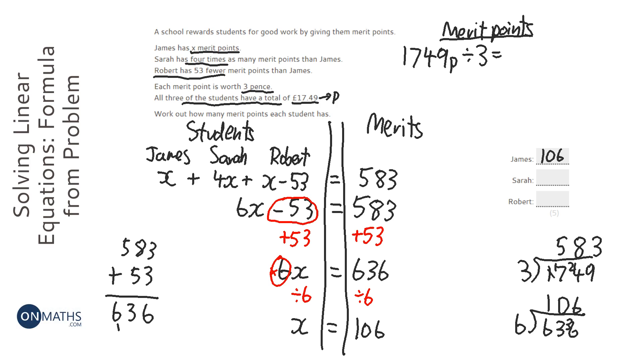So James has 106. Now Sarah has 4 times as many, so that's going to be 424. And Robert has 53 less. So 106 take away 53, so 6 take away 3 is 3, 10 take away 5 is 5. So that's going to be 53.